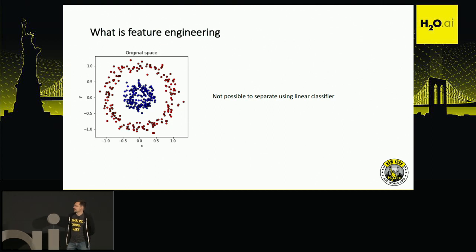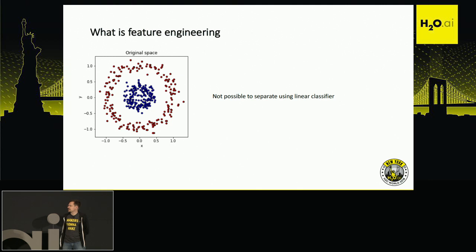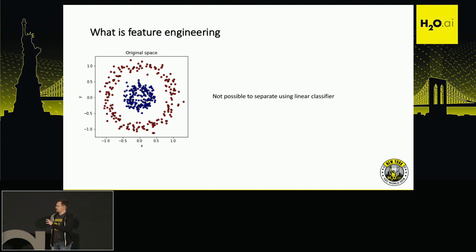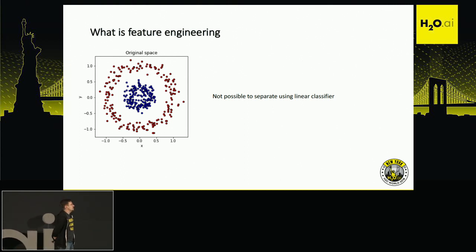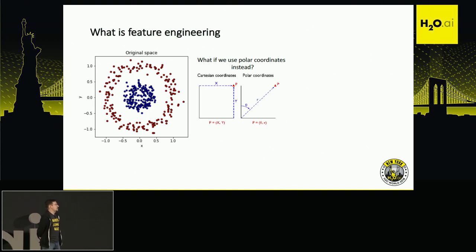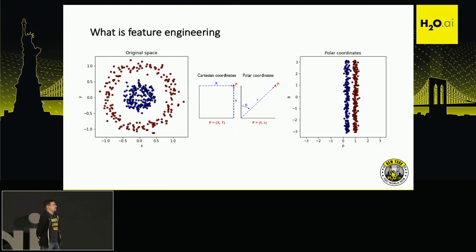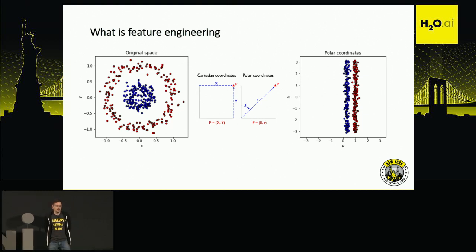Here's a motivation slide. Let's say we have a 2D example — just some points — and we're trying to distinguish blue points from the red ones. There's no way you can build a linear model to split these points into two different classes. But if you apply a simple transformation from Cartesian coordinates to polar coordinates, things become extremely simple. You don't even have to build a model at all — you can just apply a simple if-else rule to solve the problem.